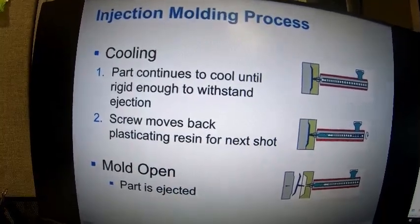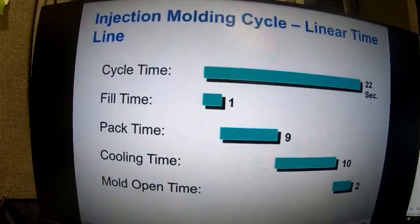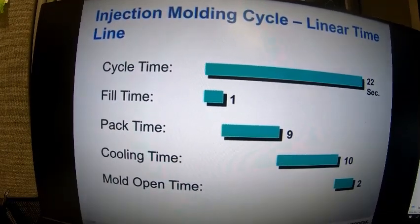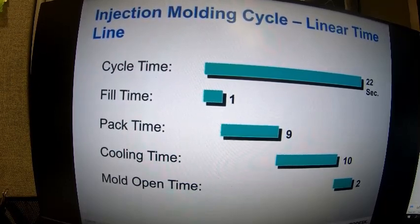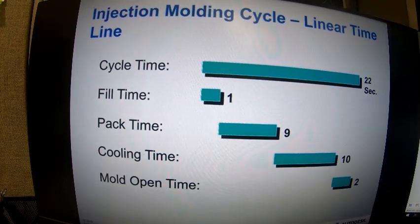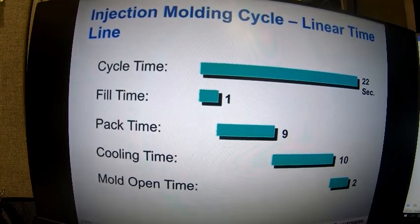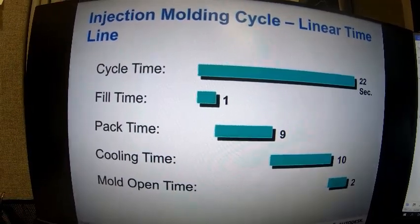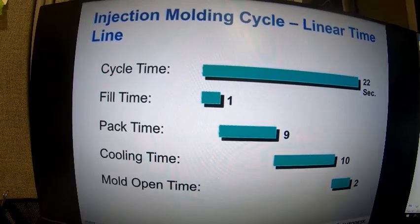After cooling is finished, the mold will open and the part will be ejected. The injection molding cycle is typically linear across the four phases: fill time, pack, cool, then mold open and eject. These four phases added together give you your cycle time. As you can see, the pack and cooling times are typically a significant portion of your cycle, so this is where you can commonly leverage the software to optimize your cycle time.